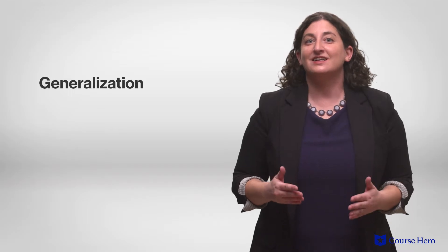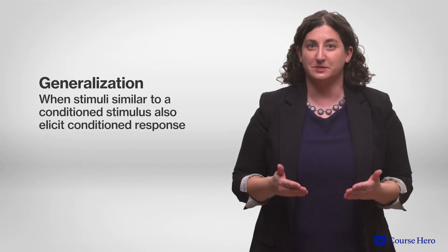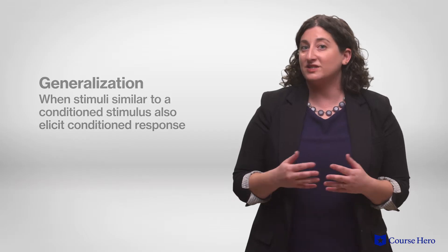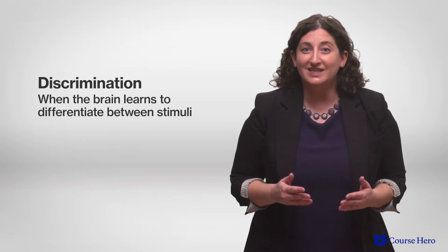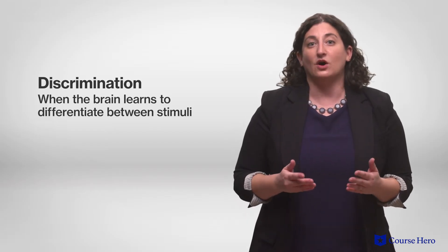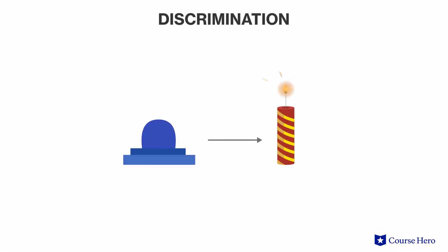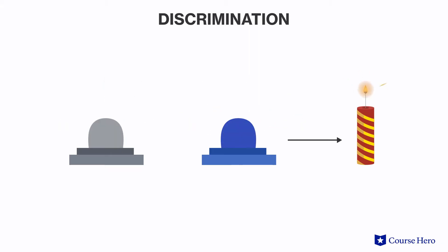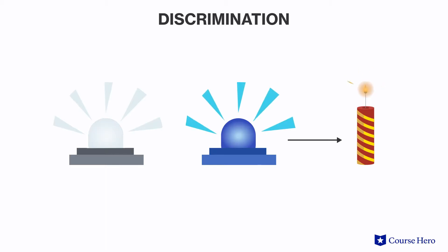In generalization, stimuli similar to the conditioned stimulus also elicit the conditioned response. For example, a person who learned an association between a flashing blue light and a firecracker may also begin to flinch at flashing lights of other colors. Conversely, through discrimination, the brain learns to differentiate between stimuli that do and do not signal the onset of the unconditioned stimulus. For example, a firecracker may explode only after a blue light flashes, but never after a white light flashes. The blue light will elicit a startle reflex, but the white light will not, because the brain has learned to distinguish between events that follow the lights.